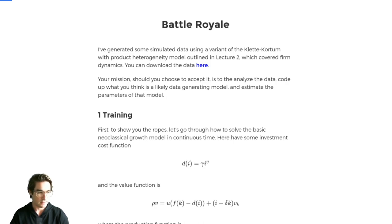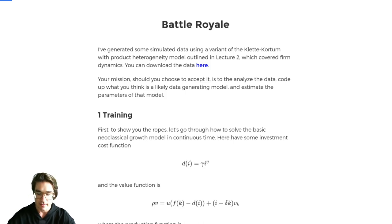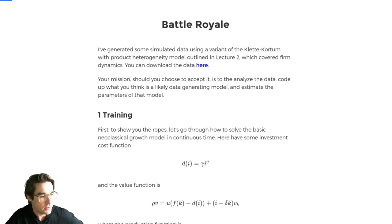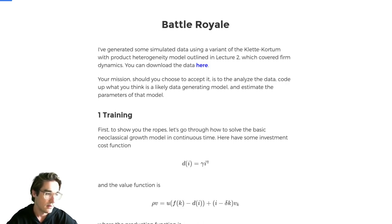Code up what you think is a good model — you can always tweak it later — get the solution, and then estimate the parameters of that model. Part of the reason the metric isn't clear is that you might not use the same model I used to generate the data, so it's not clear we can compare parameters. One option is I could generate more data from the same model with a different seed and see how you do on out-of-sample prediction.